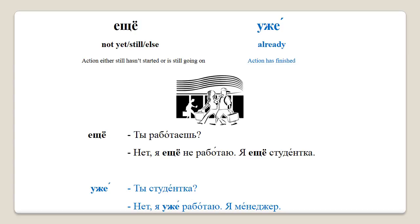Second dialogue: Ты студентка? Нет, я уже работаю. Я менеджер. Translation: 'Are you a student?' 'No, I'm already working. I'm a manager.' ЕЩЁ can also be used with question tags such as Что? — 'What?' — to say 'What else?' — Что ещё?